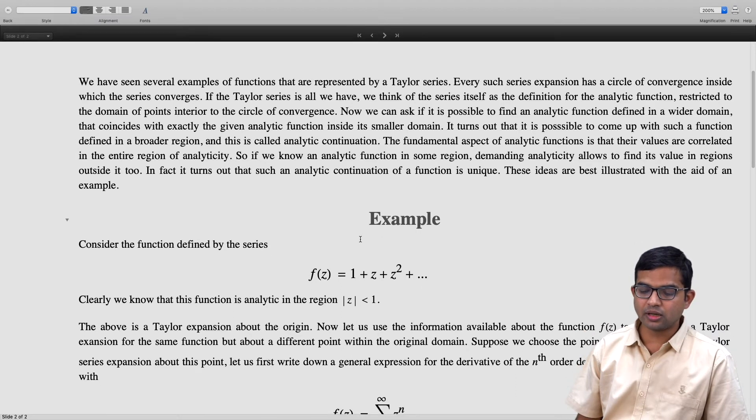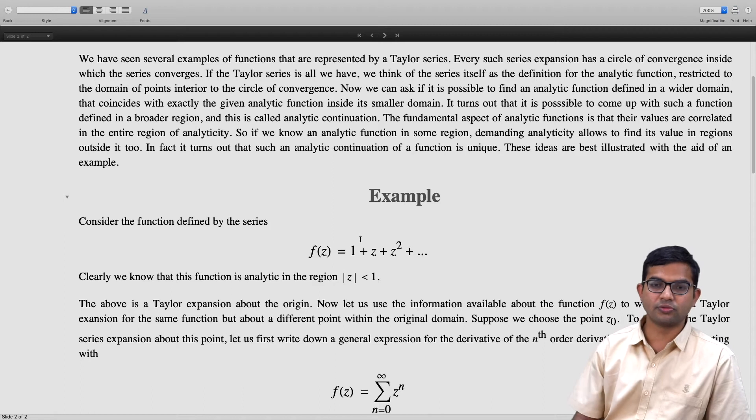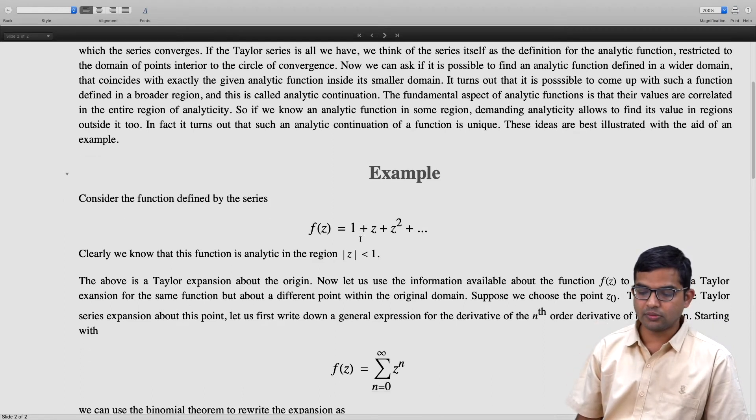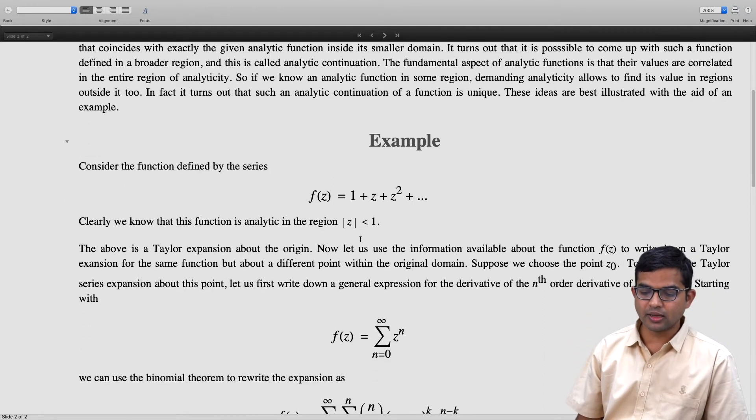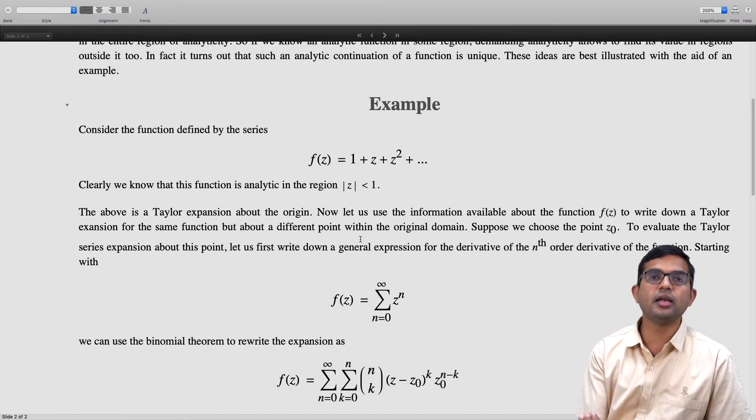Let us first write down a general expression. We start with this expression for the function f(z), but then we want to be able to rewrite this. In place of z^n, we want to write it as z^n itself as being expanded about the point z₀.